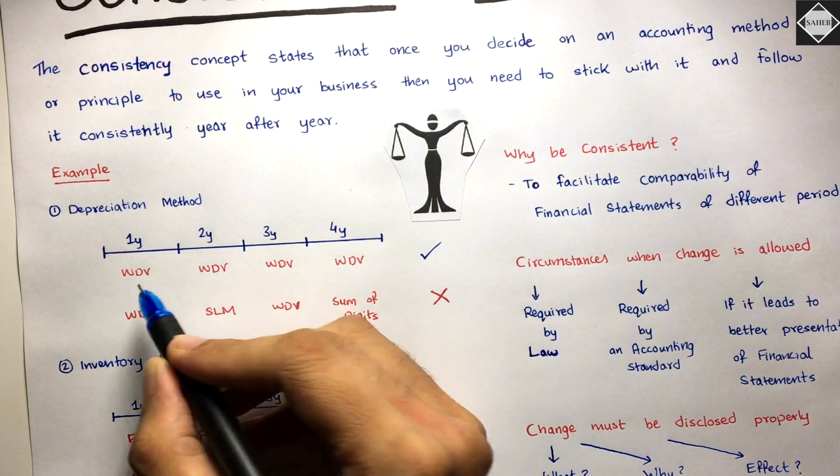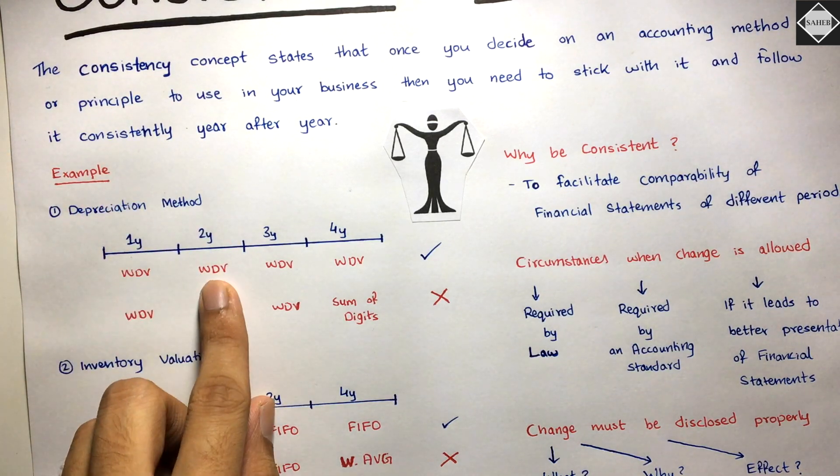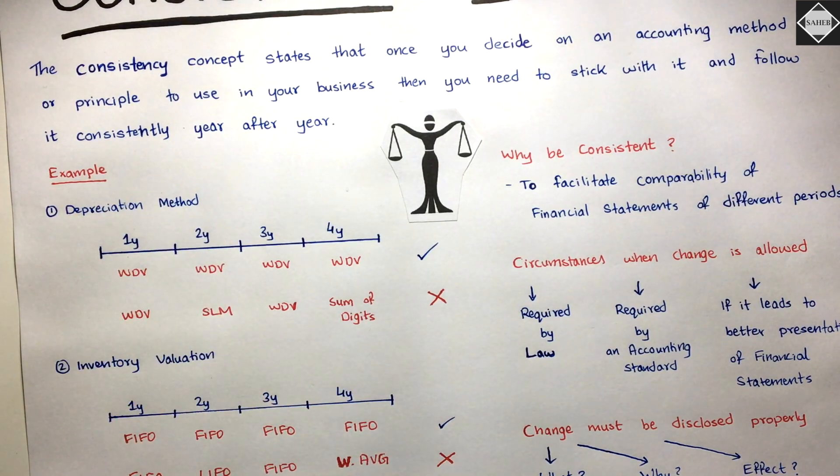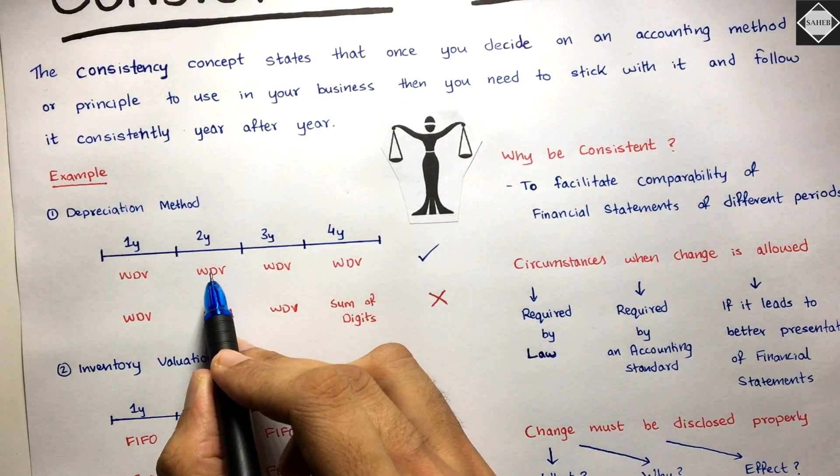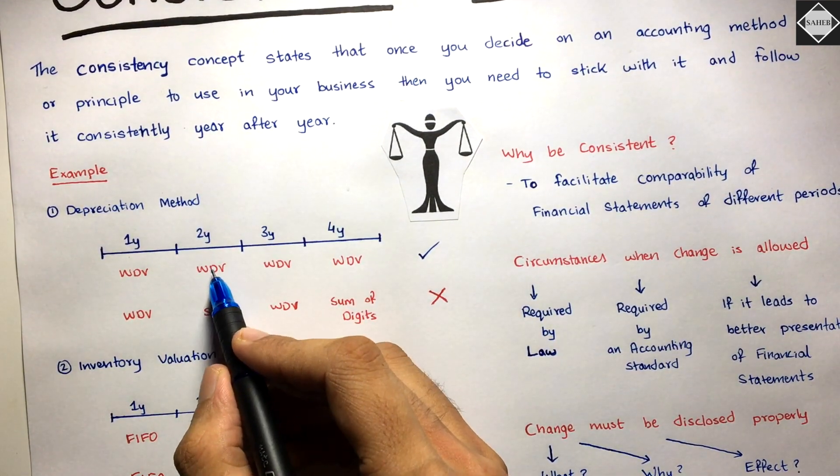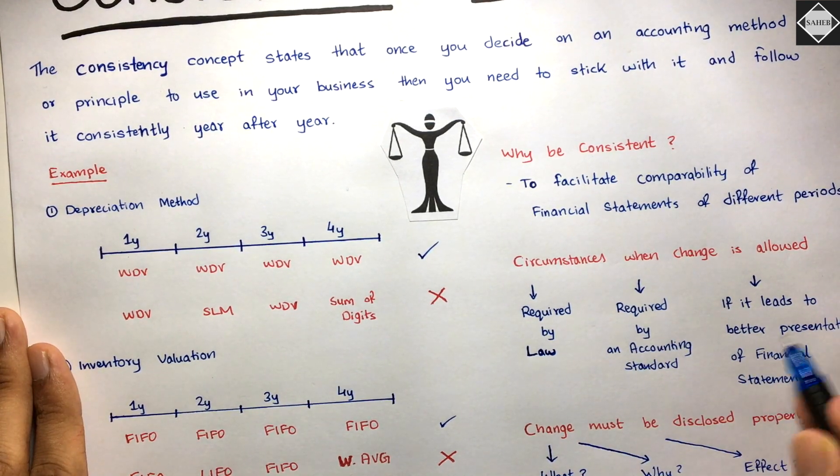In WDV method, more depreciation is charged in the early years. In SLM, depreciation will be divided evenly - constant, fixed rate of depreciation charged on the original cost. You can change when it leads to better presentation of financial statements, and I just gave you an example of how it will happen.